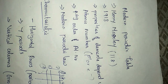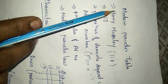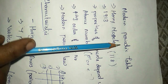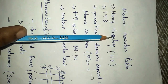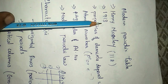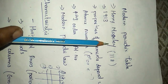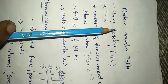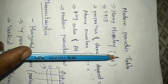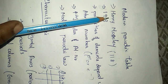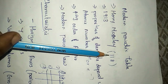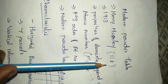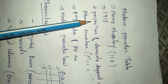The present periodic table we are following is the modern periodic table. It was designed by Henry Moseley in the year 1913, and this table totally comprises 118 elements. The present modern periodic table was proposed by Henry Moseley and contains 118 elements.